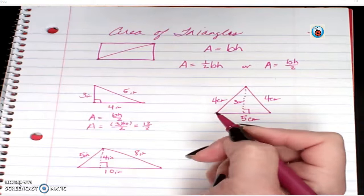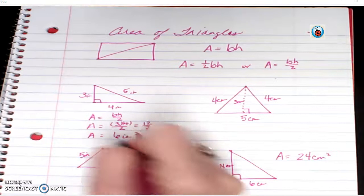Well, three times four is twelve. Twelve divided by two. And my area is six inches squared.